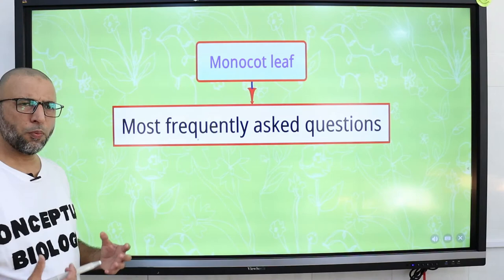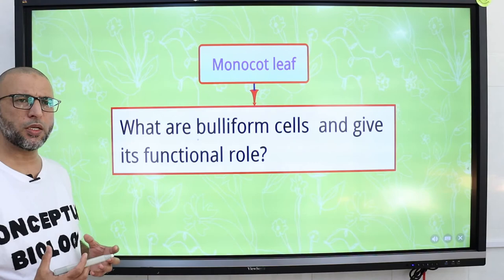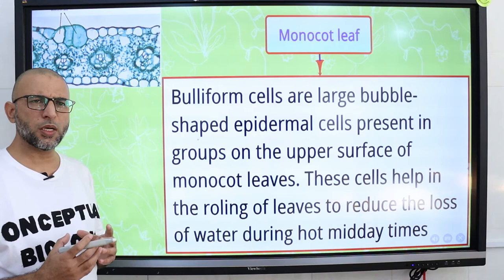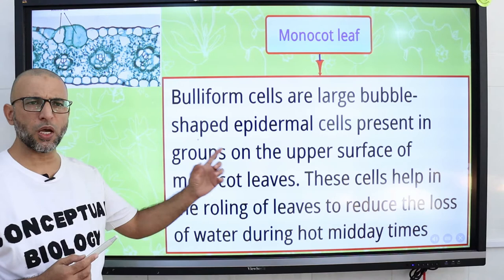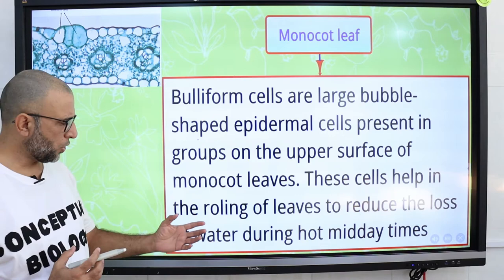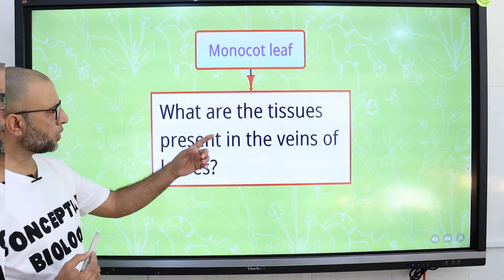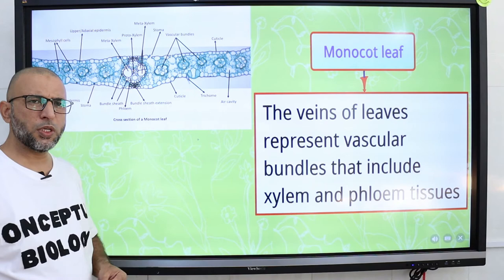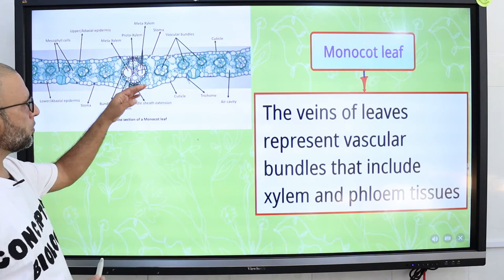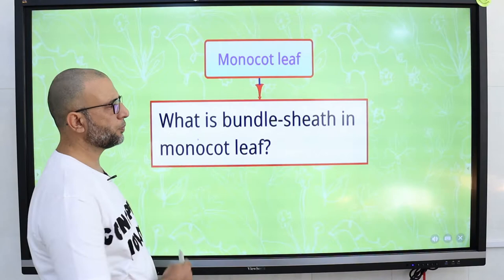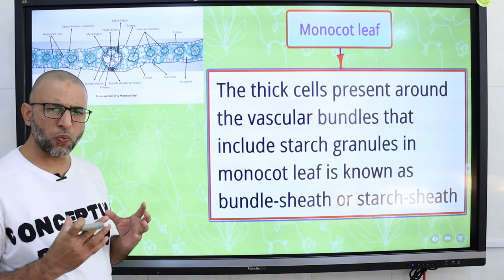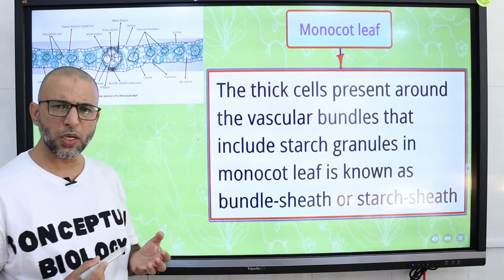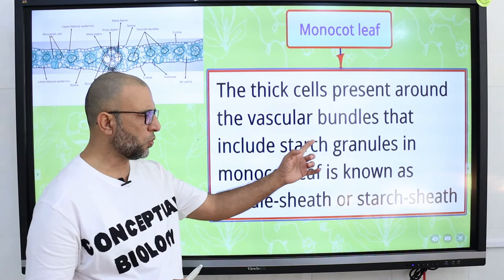Frequently asked questions: Buliform cells are large bubble-shaped epidermal cells present on the upper surface of monocot leaves. These cells help in the rolling of leaves to reduce water loss during hot midday. The veins of leaves represent the vascular bundles that include xylem and phloem tissues, with xylem directed towards the upper epidermis and phloem towards the lower epidermis. Bundle sheath cells are non-vascular cells around the vascular bundles containing chloroplasts, photosynthetic in function, and storing starch granules — hence also called the starch sheath.